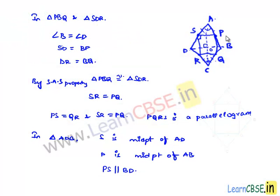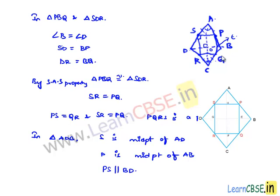Let us assume that the points where AC and BD intersect PS, RQ, SR and PQ are E, F, G and H respectively. Now we consider that PS is parallel to RQ, and we got PS is parallel to BD. If we observe clearly, H, S, G, O also form a parallelogram.